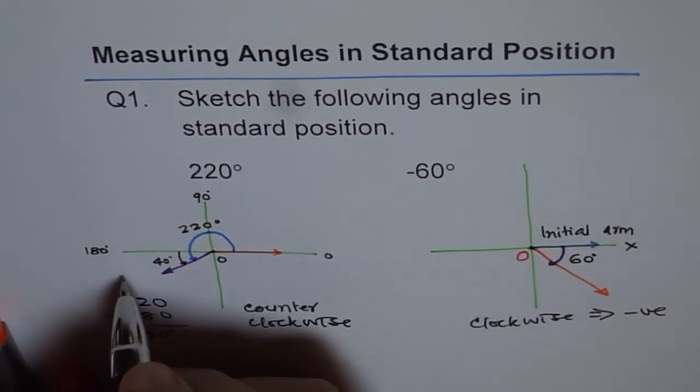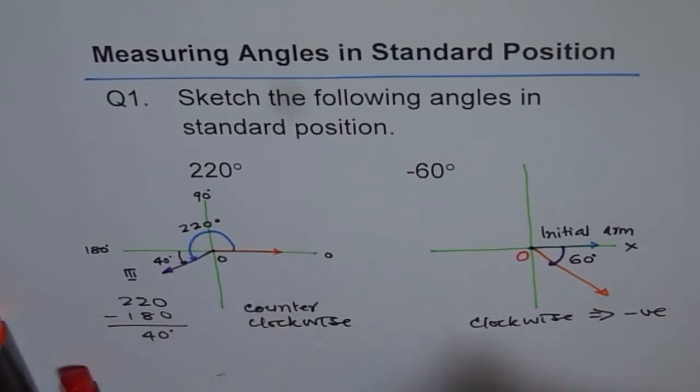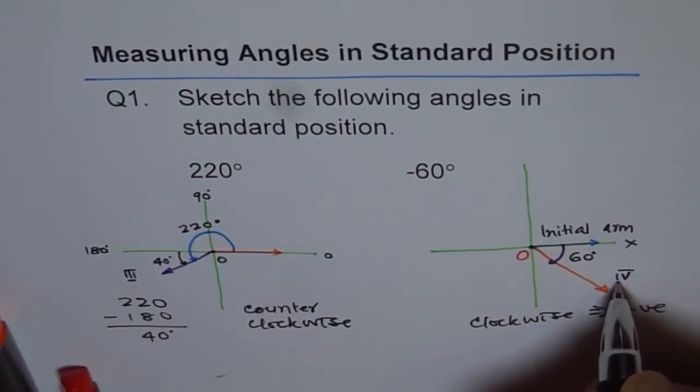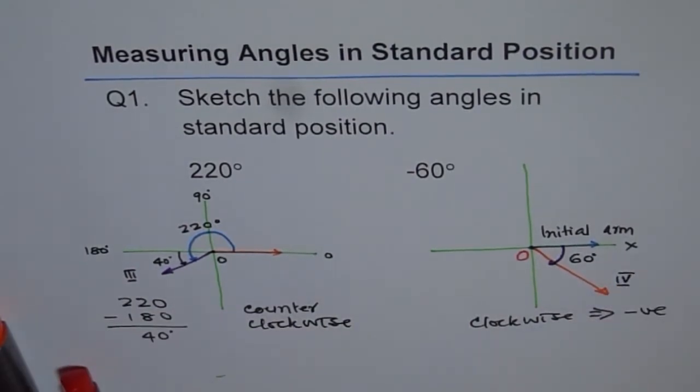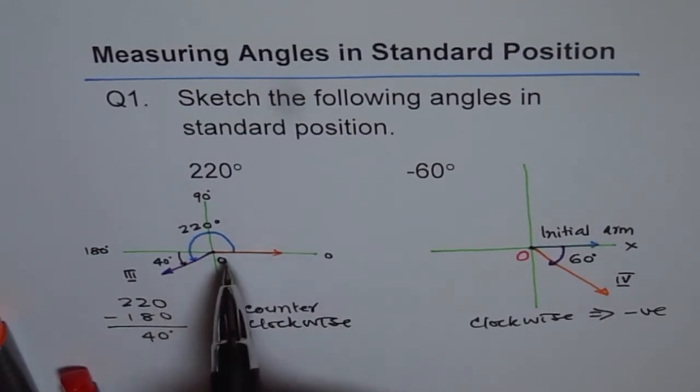Like here, in this case it is in quadrant 3 and in this case it is in quadrant 4. It could be in any quadrant. Now if you move counterclockwise, then the angle is measured as positive.